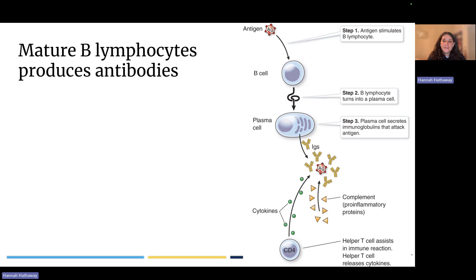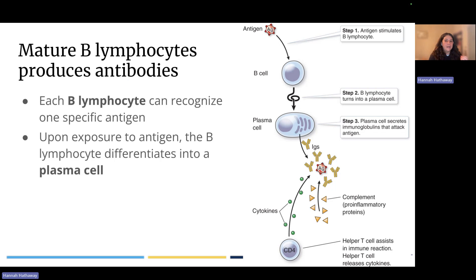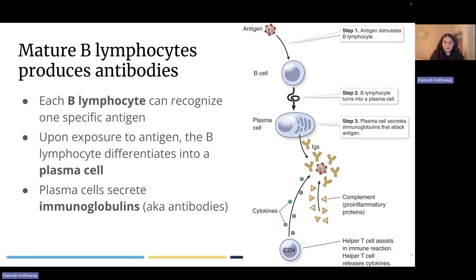The last thing to know about lymphocytes is the function of B lymphocytes specifically. B lymphocytes are really important because they produce antibodies. All lymphocytes are specific, meaning each B cell will recognize just one specific type of antigen. Once a B cell encounters its antigen, it differentiates into its final form called a plasma cell. Those plasma cells then secrete proteins called antibodies into the blood. Antibodies are also called immunoglobulins — you should know both terms for pathophysiology.